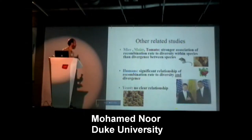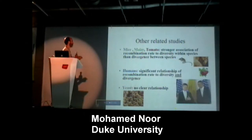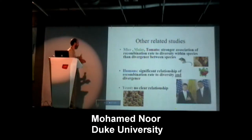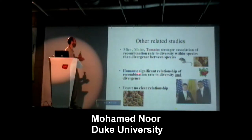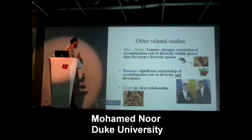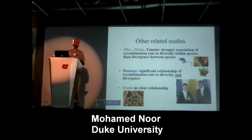In mice, maize, and tomatoes, we also see a strong association of recombination to diversity within species, but not to the divergence between species. In humans, there's a significant relationship of recombination to diversity within species and to convergence between species. In yeast, curiously, there's no clear relationship at all.